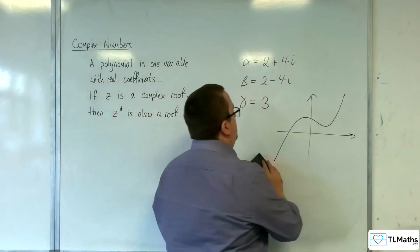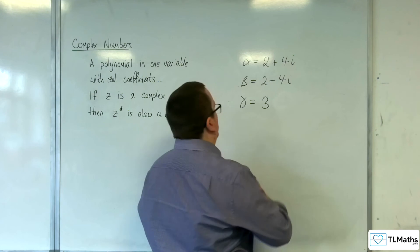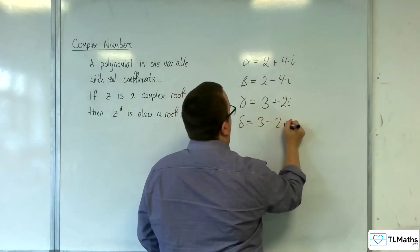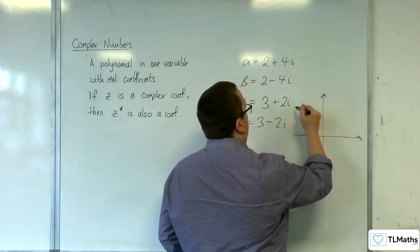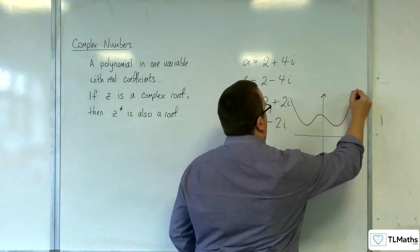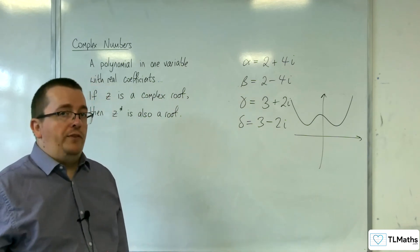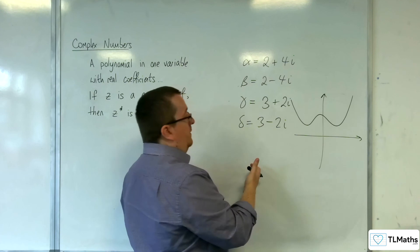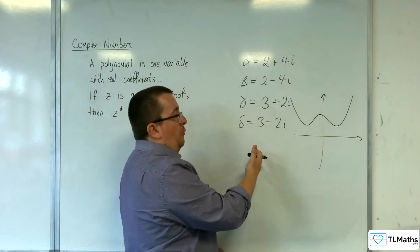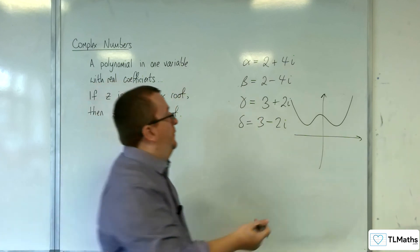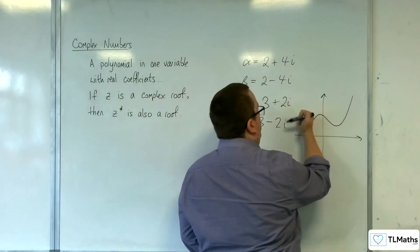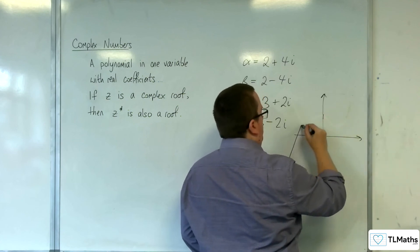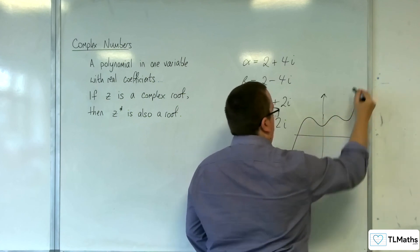While if you do go for that quartic, so 3 plus 2i and delta is 3 minus 2i, it's perfectly fine for a quartic to look something like that and never cross the x-axis. But then if you had another root in, it's going to have to be real for a quintic, because for a quintic it's got to cross the x-axis at least in one place.